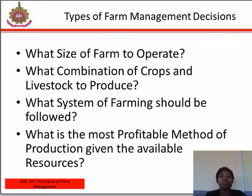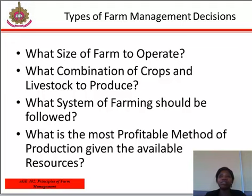Other decisions include: what is the most profitable method of production given the available resources; what kind of machinery and equipment to use and at what level of production to substitute machinery for labor; how much of family labor and paid labor to use; how much of the crops and livestock to consume at home and how much to sell; the selling price of farm products and the problems of marketing; and finally, what are the sources of credit available to the farmer and how can he make proper use of them.